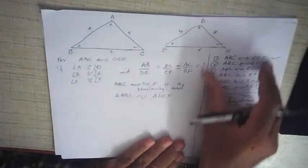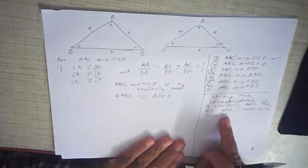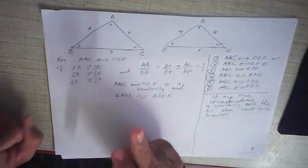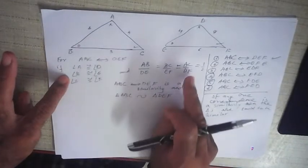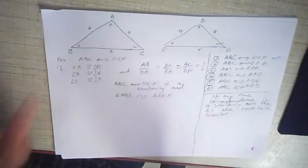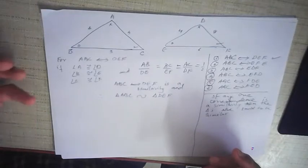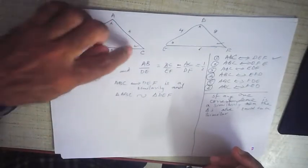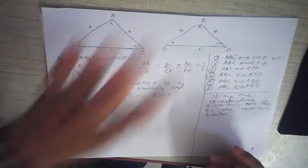Out of six possible correspondences between the vertices of two triangles, if any one of them is similar, then the triangles are said to be similar. We have two necessary conditions: the angles must be congruent and the sides must be in the same proportion. But you will find later that if only two angles are congruent, the third angle is automatically congruent because the sum of the three angles is always equal to 180.